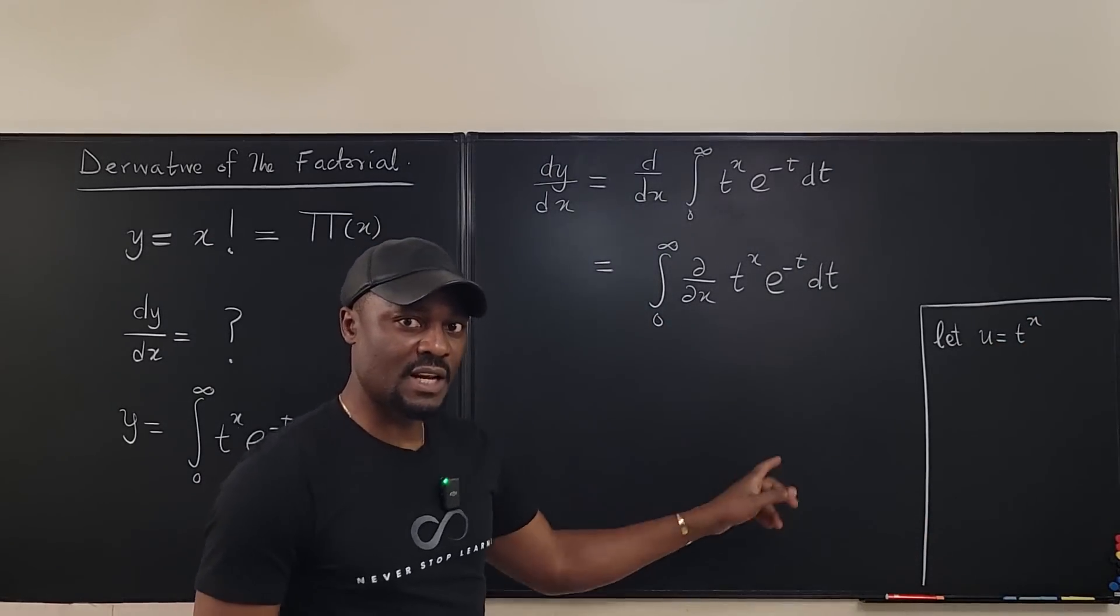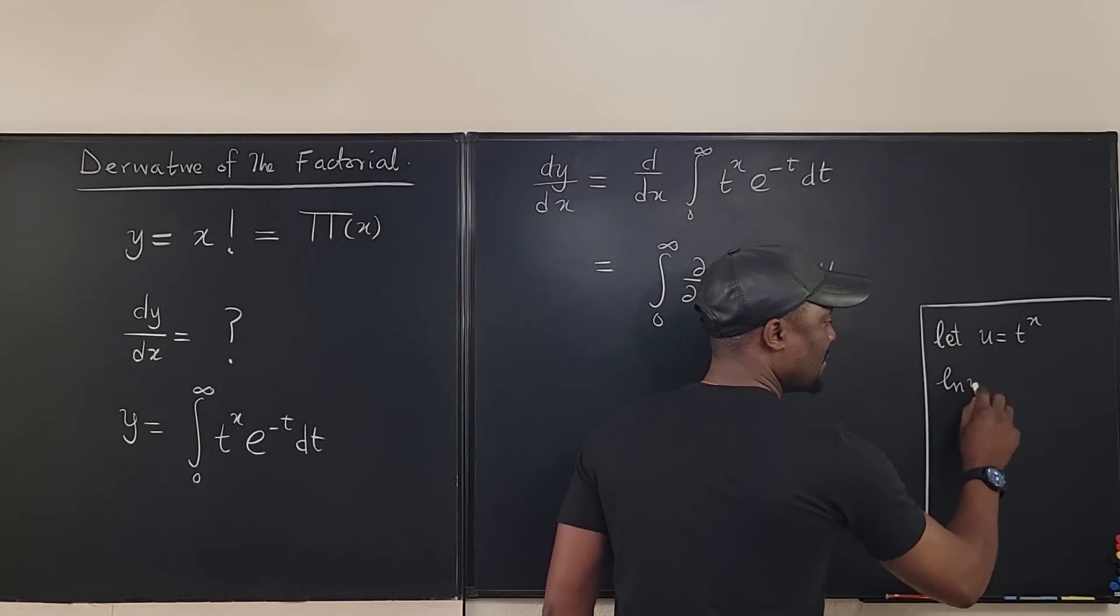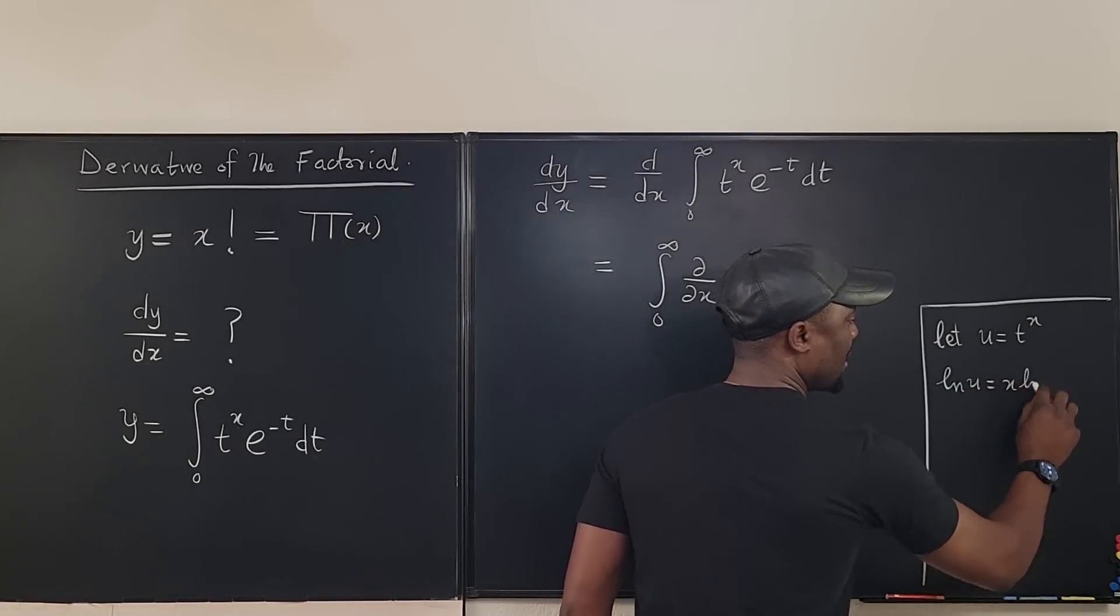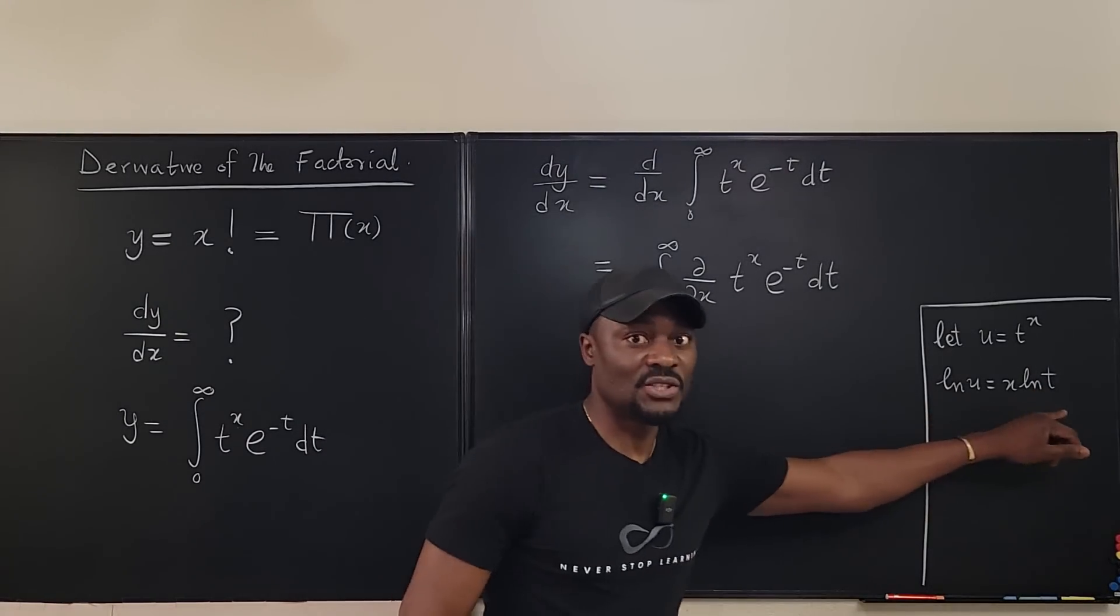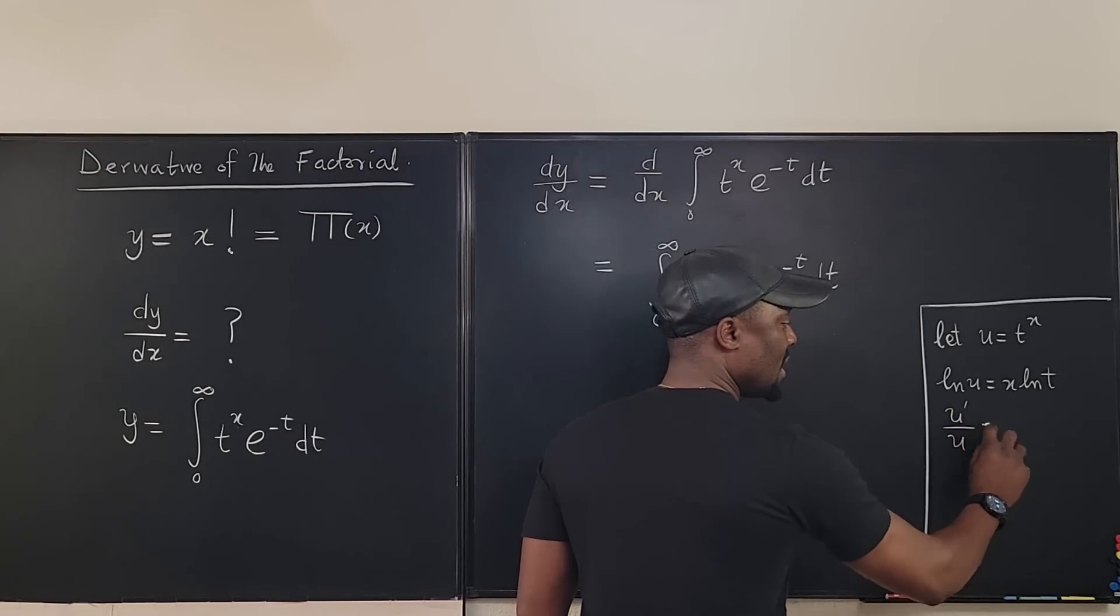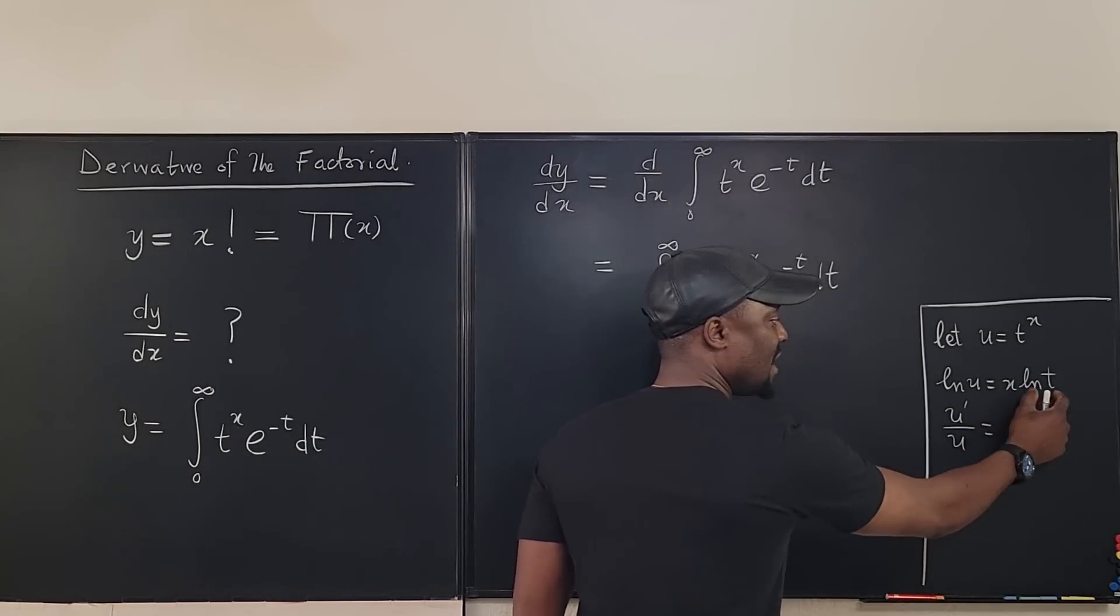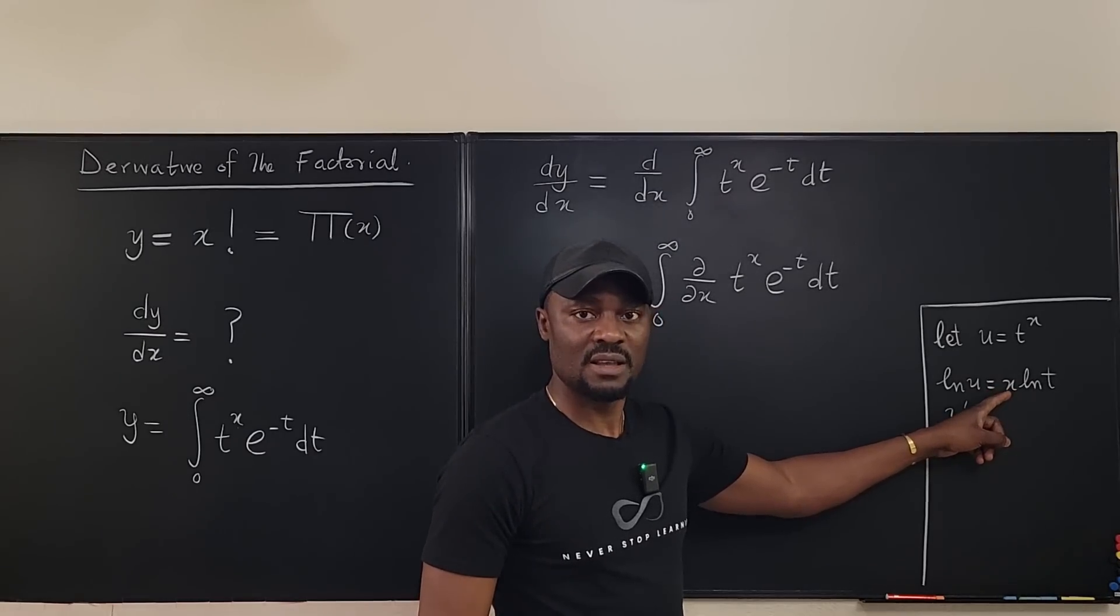we say let u be equal to t to the x. So we take the natural log of both sides. It's going to become ln of u equals x ln of t. You remember? Okay, now we're going to differentiate both sides. It's going to be u prime over u. If I differentiate this, see ln of t is a constant. So what I'm just doing is I'm differentiating x.